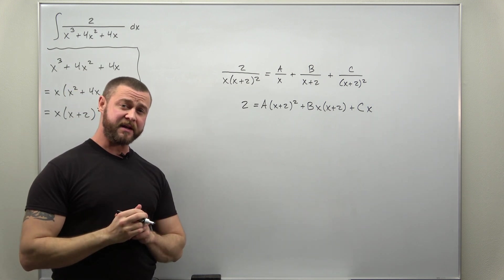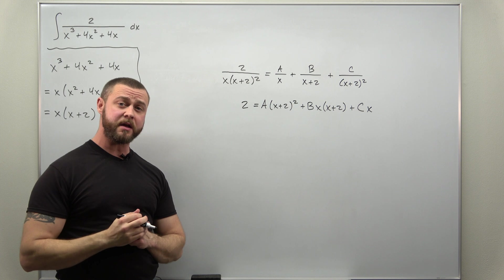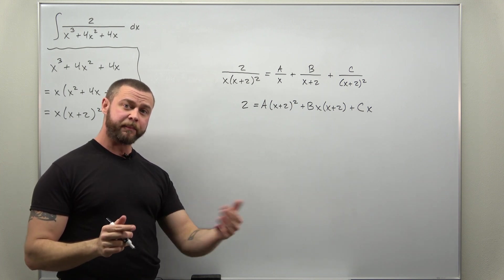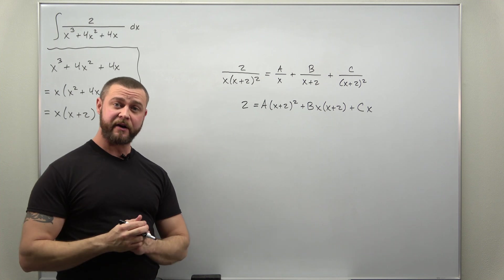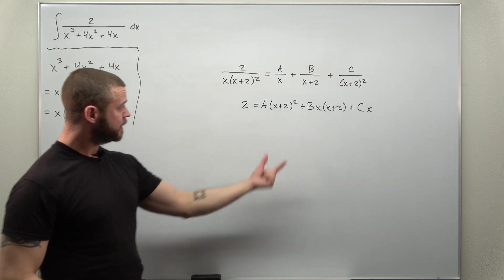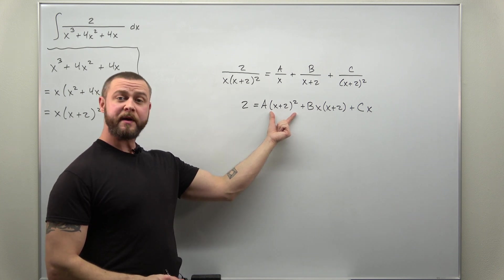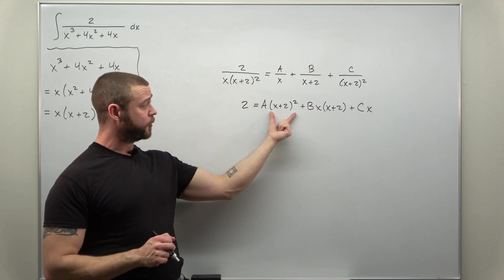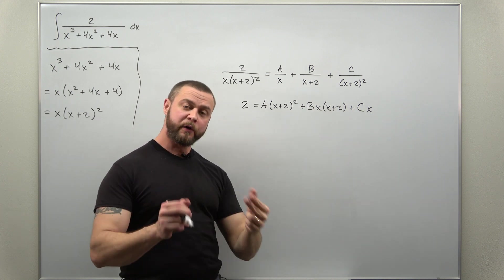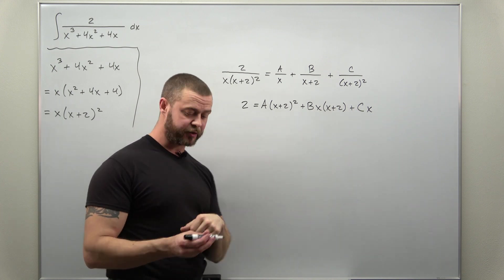Alright now to solve for a, b, and c here we're still going to use the plugging in method and since we have three unknowns we need to plug in three values for x. Two of them we can determine easily. This factor will become zero when x is negative 2 and then the factors of x by themselves there, those will become zero when x is zero.